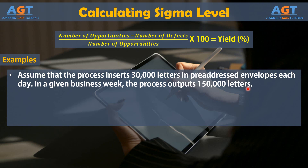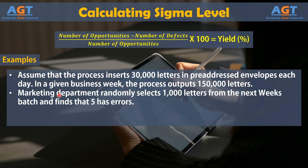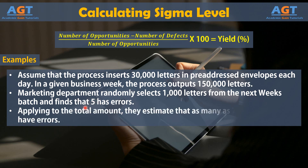The marketing department begins receiving complaints that people are receiving letters in envelopes that are addressed to them, but the letters inside are addressed to or relevant to someone else. The marketing department randomly selects 1,000 letters from the next week's batch and finds that 5 of them have errors. Applying that to the total amount, they estimate that as many as 750 letters could have errors.